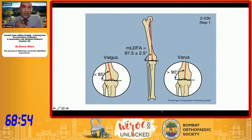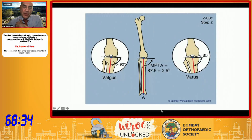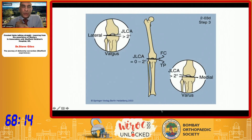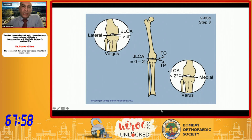Going back to the main alignment slide, the mechanical lateral distal femoral angle is usually around 87–88 degrees. Anything less would be valgus, anything more would be varus. For the tibia, it's typically about 88 degrees, with the axis passing directly down the centre. Be careful to look at joint congruency, as non-parallel joint surfaces can introduce intra-articular changes to the overall alignment.